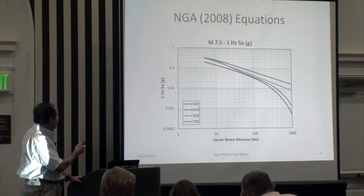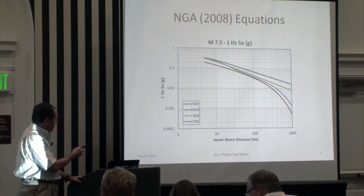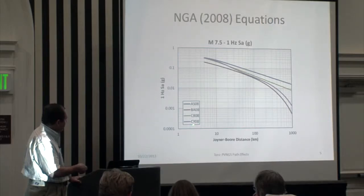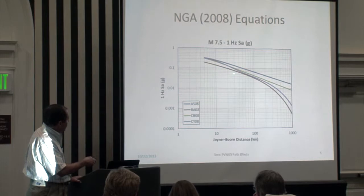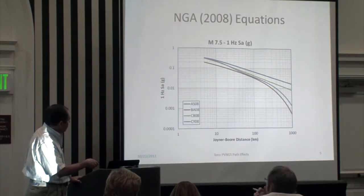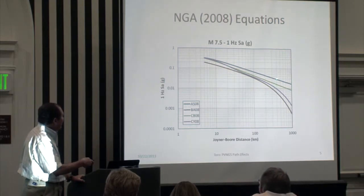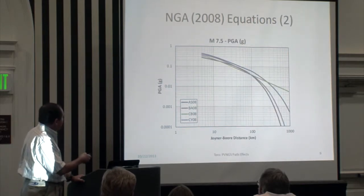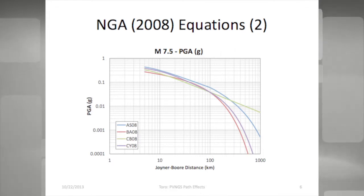At the time we had the NGA West equations. Here we have results for magnitude 7.5, 1 Hz. Two of the equations have inelastic attenuation terms — Atkinson-Boore and Chiou-Youngs had inelastic attenuation gamma terms — and they have similar predictions over the entire range of distances. What we care about is 200 to 300 kilometers, shown up to 1,000 km with eastern U.S. bias. You also see that the odds are off by roughly a factor of two, maybe more, in this distance range of interest.